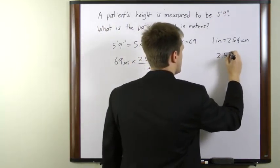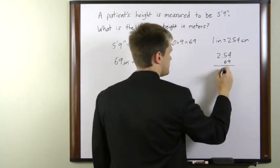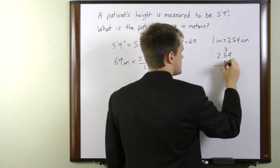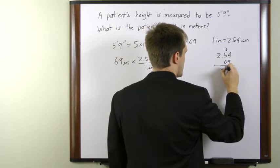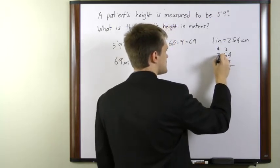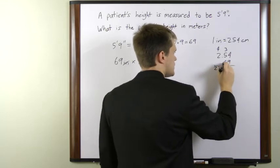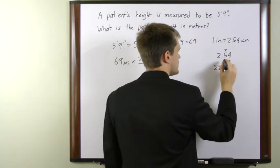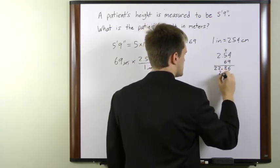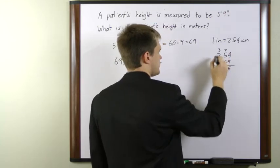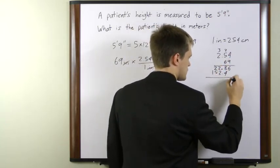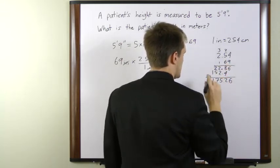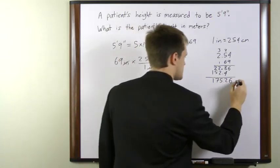So 2.54 times 69. 9 times 4 is 36. 9 times 5 is 45 plus 3 is 48. 9 times 2 is 18 plus 4 is 22. 6 times 4 is 24. 6 times 5 is 30 plus 2 is 32. 6 times 2 is 12 plus 3 is 15. So we'll add these up and that gives us 175.26 centimeters.